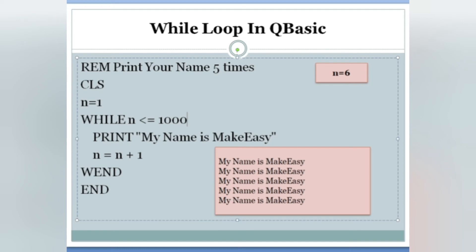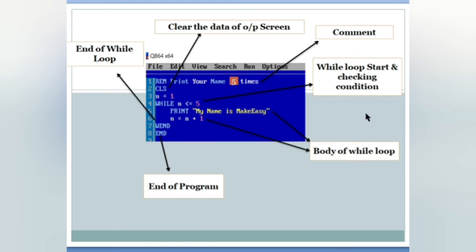Just try it at home and you will be very clear about this concept. Take a screenshot: CLS clears the output screen, REM is used to write comments in the program. 'While' starts the while loop and checks the condition. When the condition is true, it prints the name — N equals to N plus one is the value increment — that is the body of the while loop. WEND is the end of the while loop, and END is the end of the program.